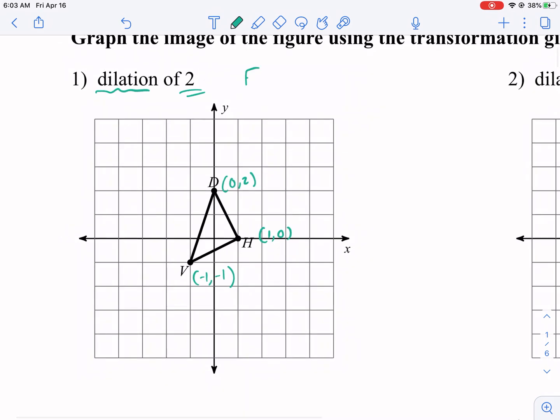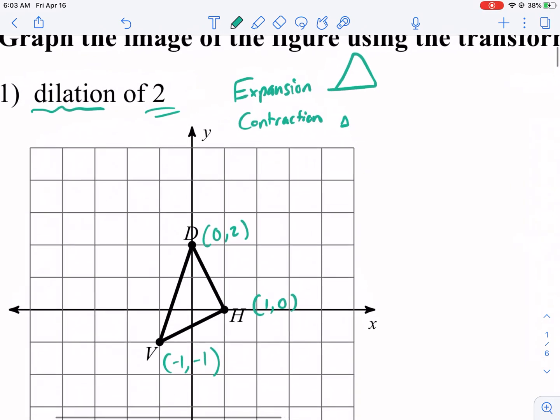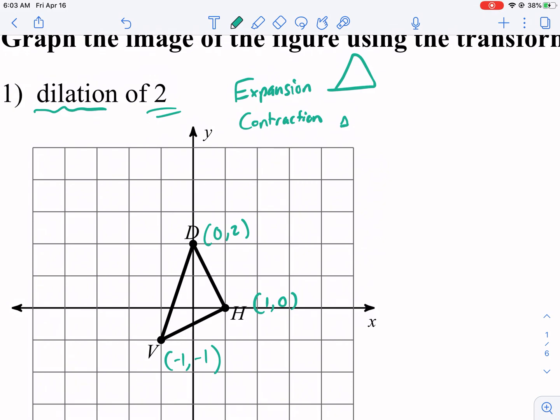Dilation means it's either an expansion or a contraction. So it's either going to get bigger or it's going to get smaller, and that's what it means. Now, dilation of 2, this is talking about the scale factor. A scale factor is something that makes it either grow or shrink. So think expansion is grow. There's lots of words I'm throwing out, but this is all synonymous, and our contraction is shrink. And that's what the scale factor helps us determine.